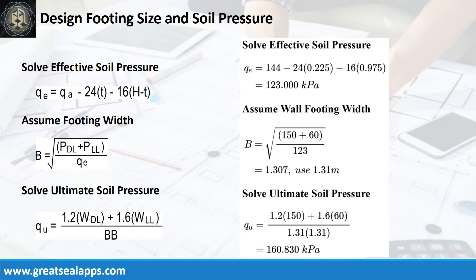Given actual dead load equals 150 kN and actual live load equals 60 kN, the footing width is 1.31 m and the ultimate soil pressure is 160.83 kPa.